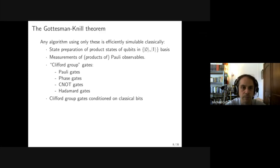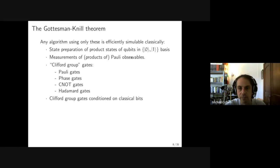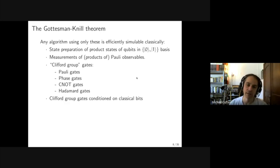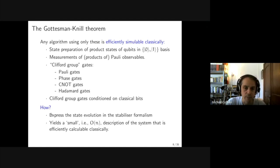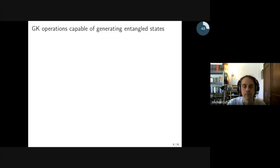Using the stabilizer formalism, one can prove the Gottesman-Knill theorem, which tells us that any algorithm using only the following operations is efficiently simulable by a classical computer: state preparation of product states of qubits in the zero/one basis; measurements of products of Pauli observables; the Clifford group of gates — Pauli gates, phase gates, controlled-NOT gates, and Hadamard gates; as well as Clifford group gates conditioned on classical bits. Essentially, we express the state evolution corresponding to a given combination of these operations in the stabilizer formalism. Instead of an exponentially long description, we get a linear description of the system that is efficiently calculable classically.